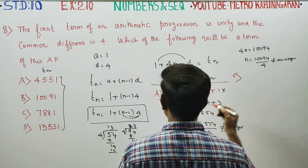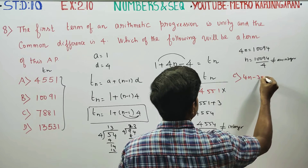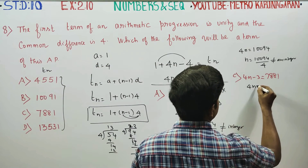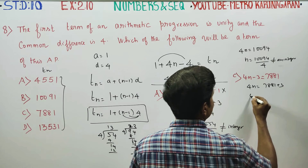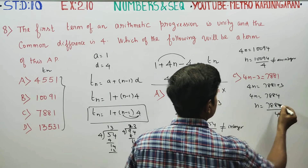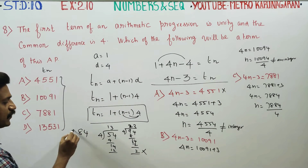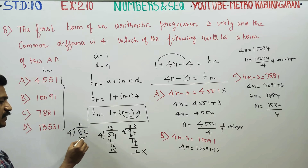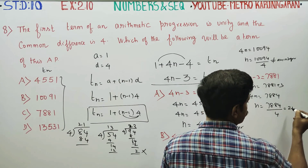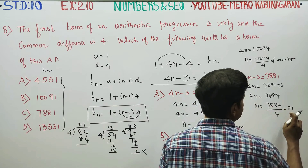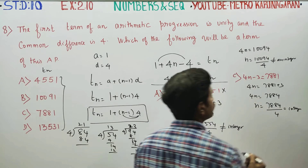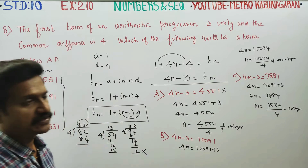Option C is 7881. Set 4N - 3 = 7881, so 4N = 7881 + 3 = 7884. N = 7884 divided by 4. Checking last two digits: 84 divided by 4. This divides evenly — it is an integer. So 7881 is a term of the AP.